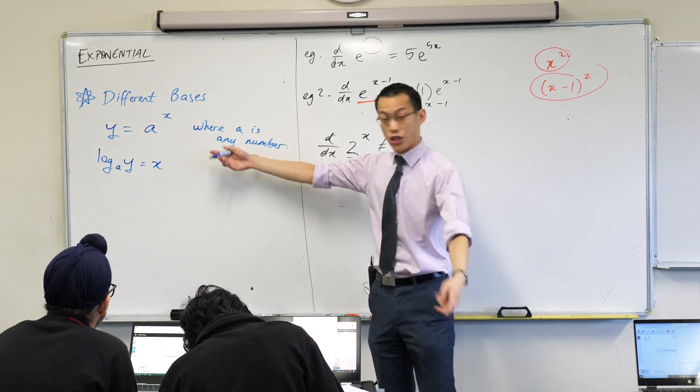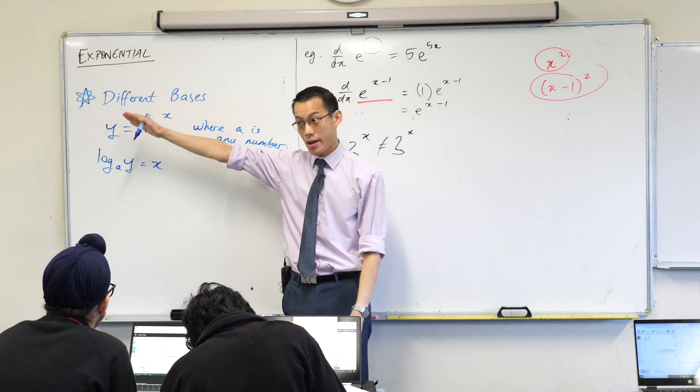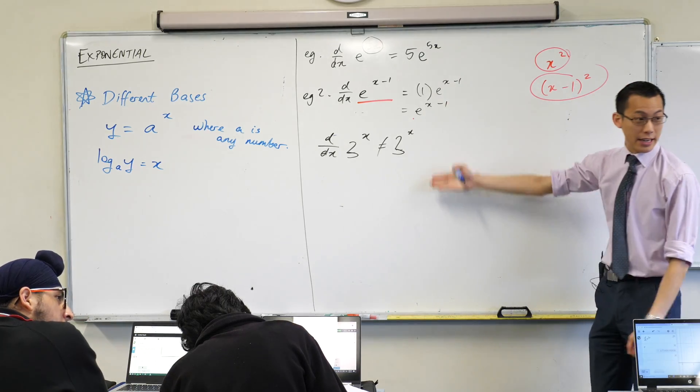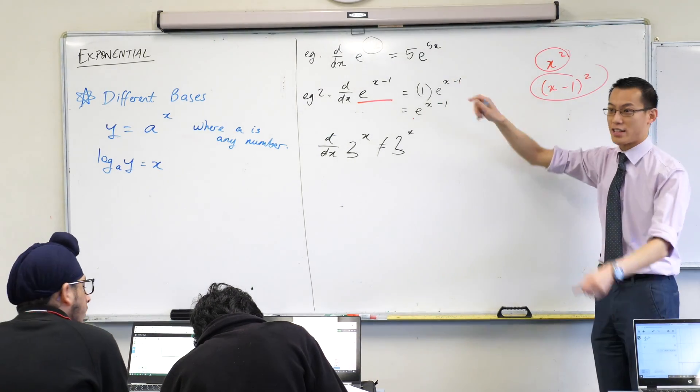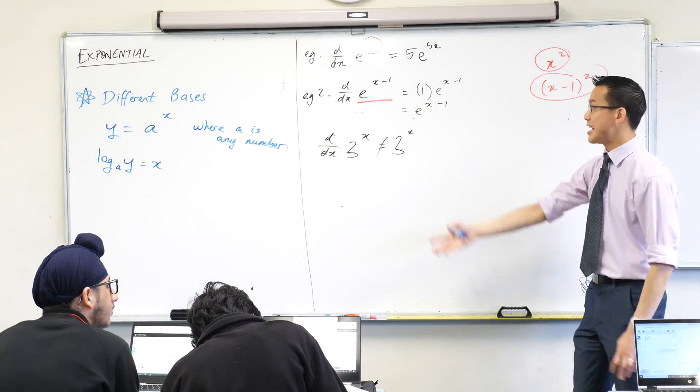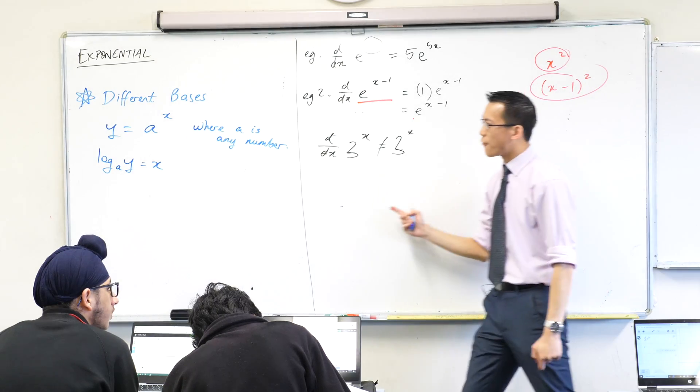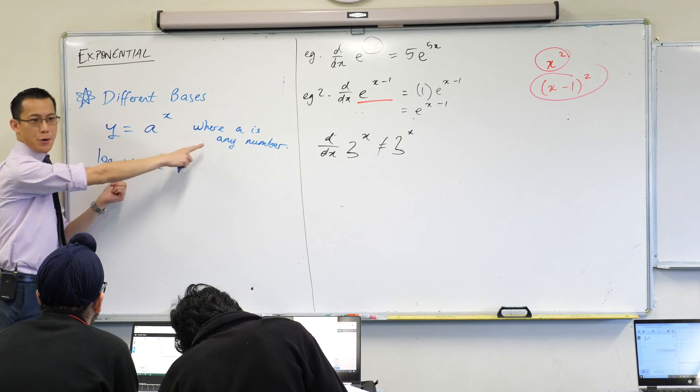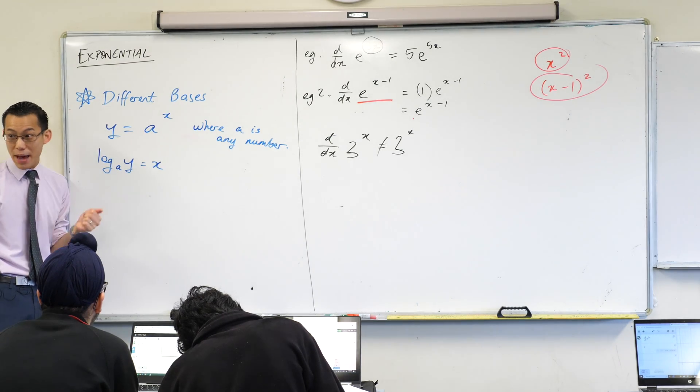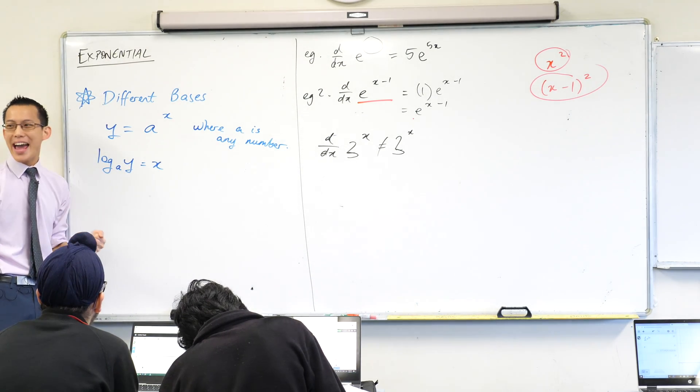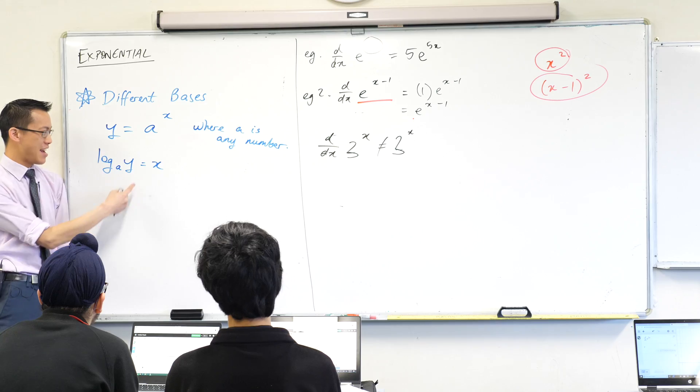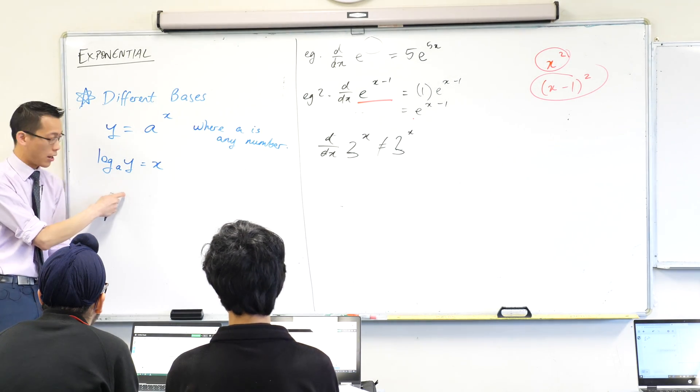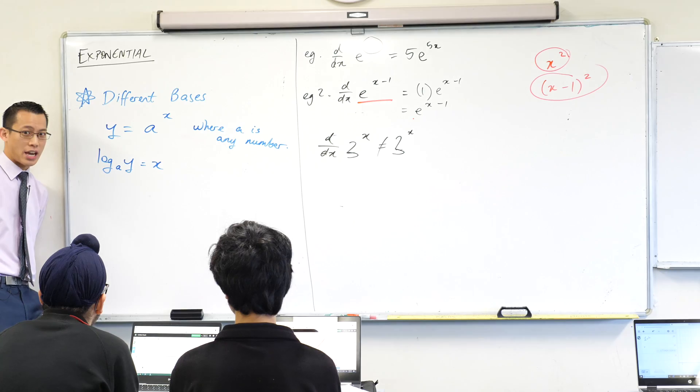So what I've done is I've changed the subject - it was y before, now x is the subject. Now, what we've got here is when the base is e, that's really nice. When the base is e, everything is easy. If only I could write this logarithmic equation without some weird base. If only I could change the base. Oh wait, we have a rule for this.